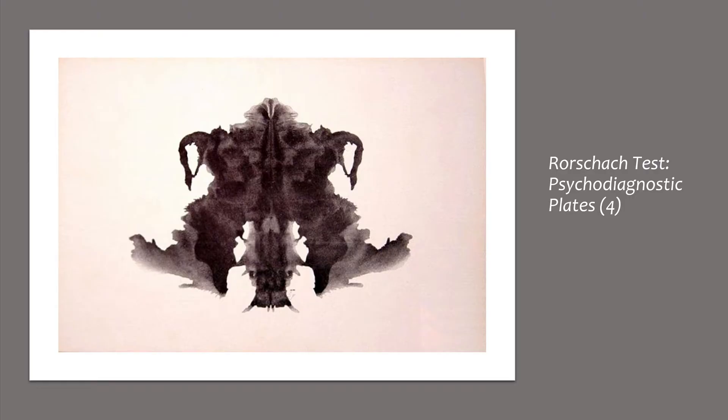Card four is notable for its dark color and its shading, posing difficulty for depressed subjects, and is generally perceived as a big and sometimes threatening figure. Compounded with the common impression of the subject being in an inferior position, looking up to it, this serves to elicit a sense of authority. The animal or human content seen in the card is almost invariably classified as male rather than female, and the qualities expressed by the subject may indicate attitudes towards men and authority. Because of this, card four is often called the father card. Over 40% of responses were related to animal hides, skins, or rugs.